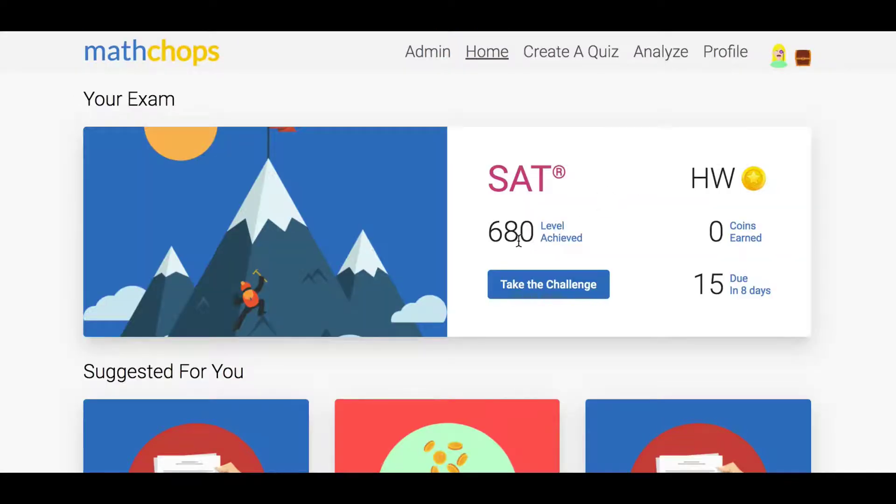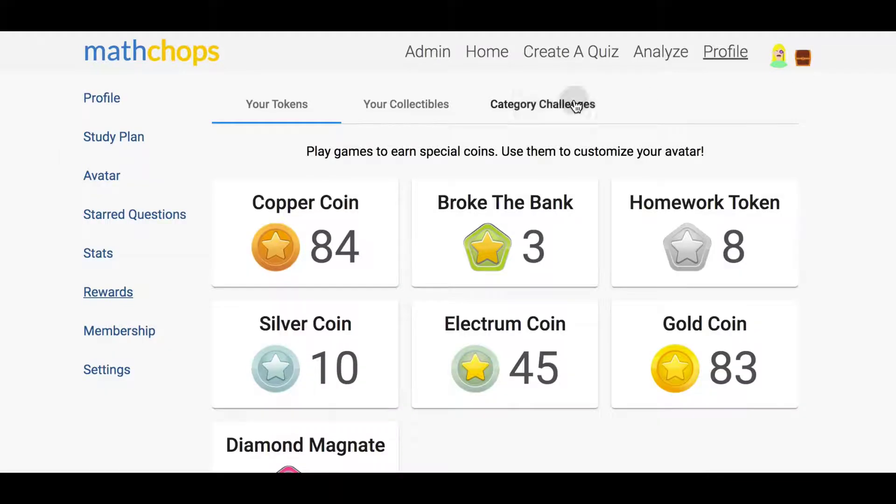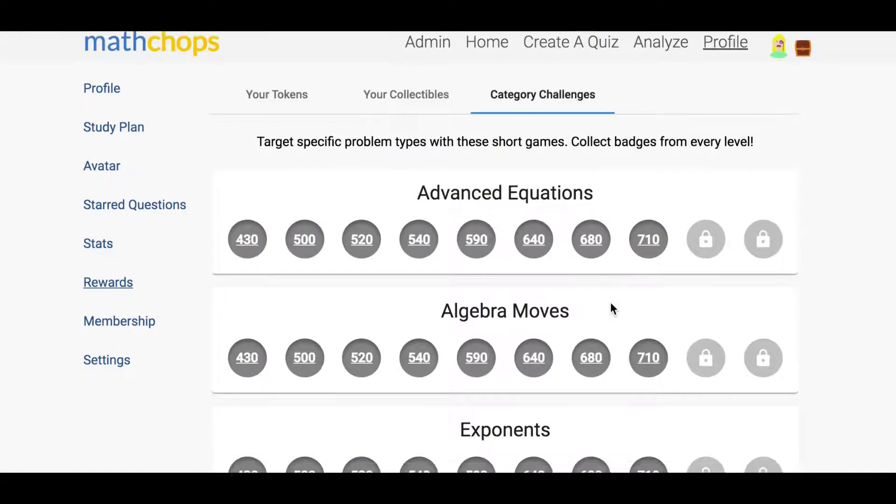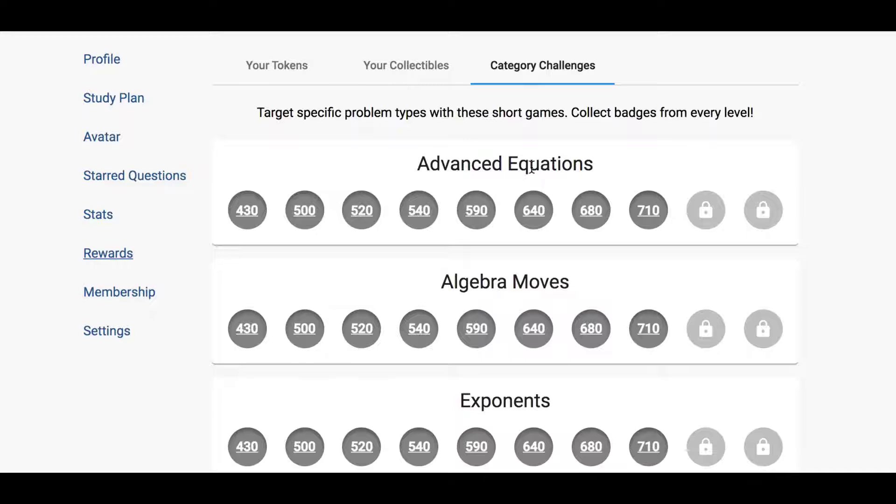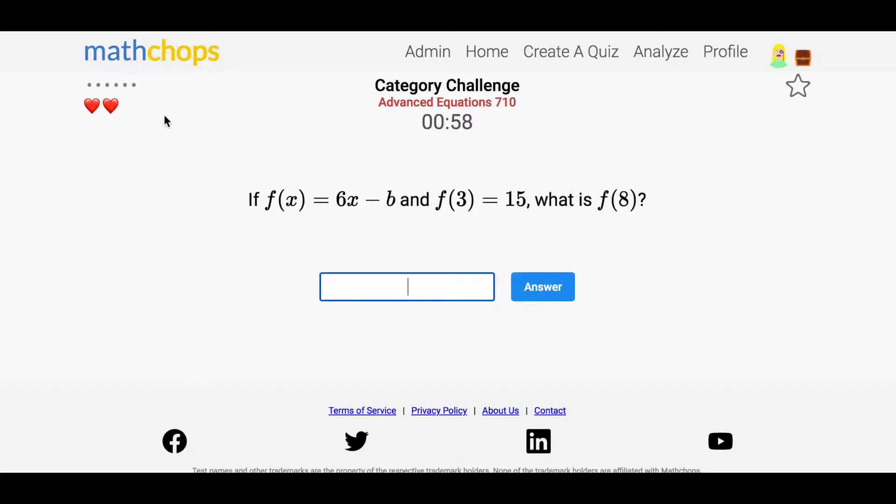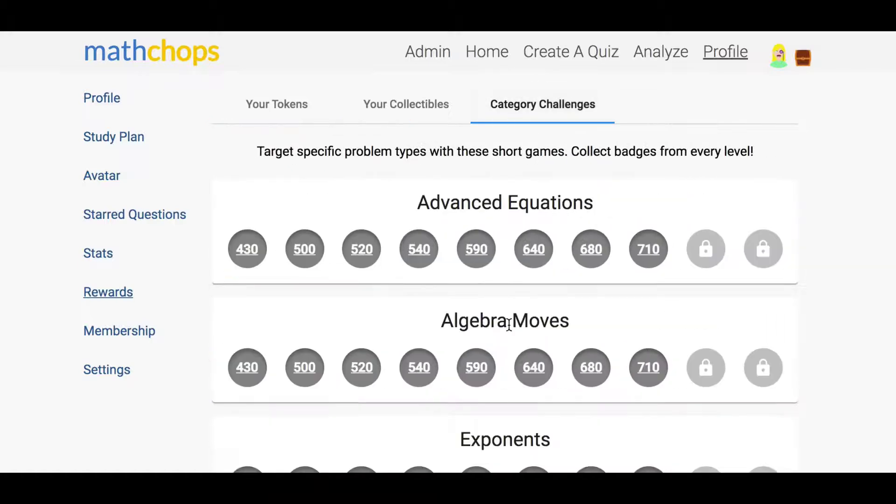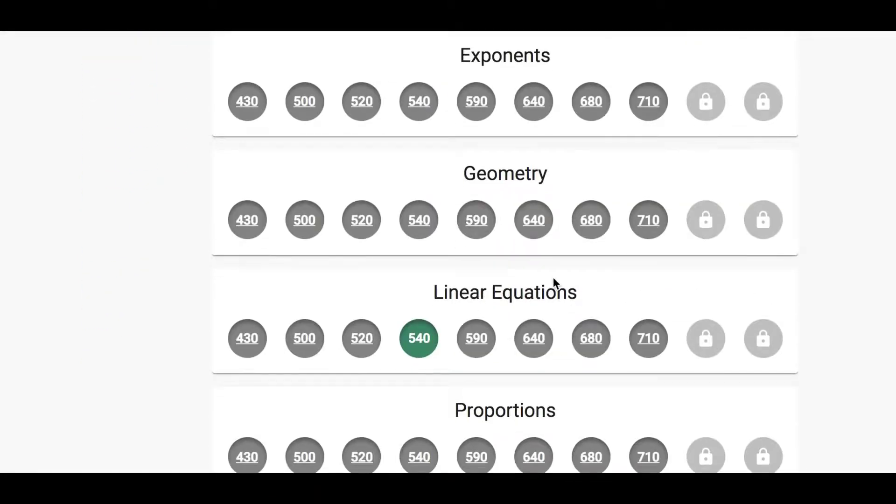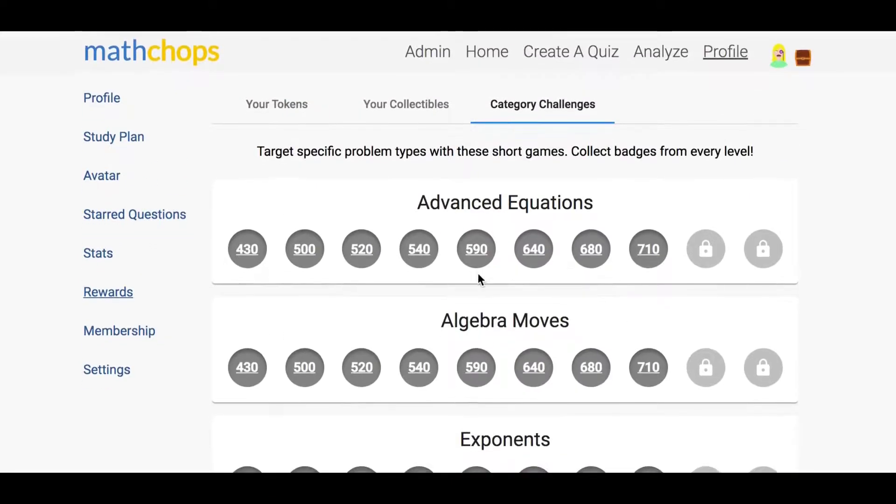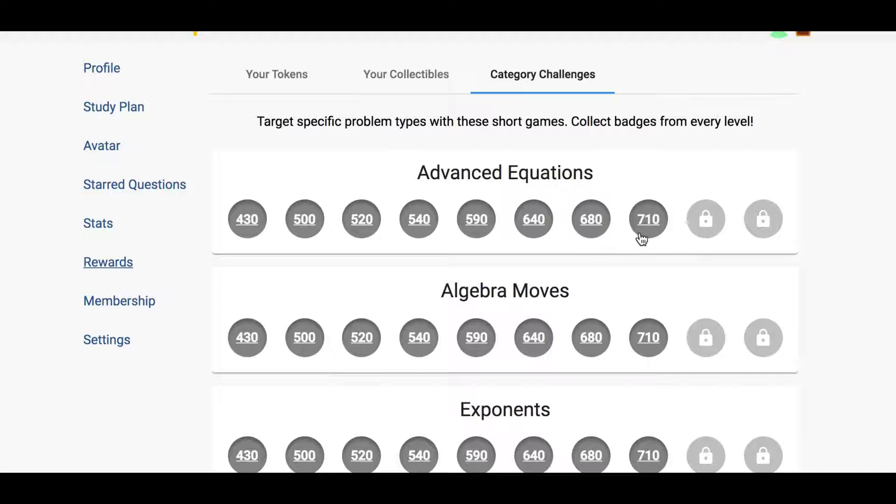Once your student's gotten this score to the appropriate level, you're going to want them to start working on category challenges. These are short quizzes that target specific areas at specific levels of difficulty. If you get six questions right before you get two wrong, then you're going to earn one of these green tokens. I normally will not have my advanced students working on these easier category challenges, but I will have them earn everything from 680 up.